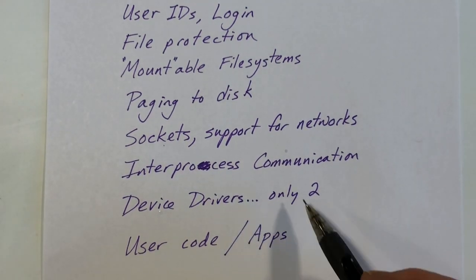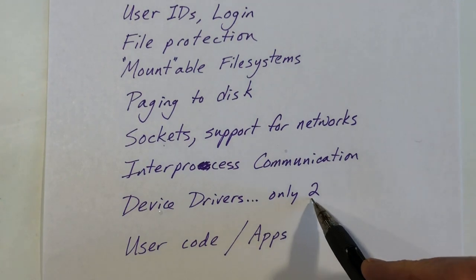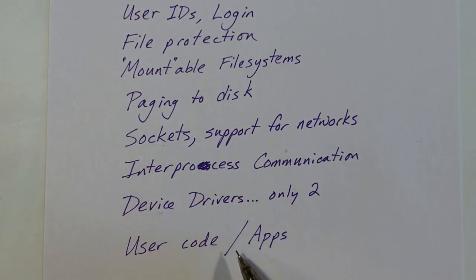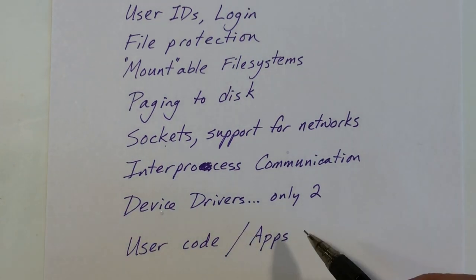There are two device drivers, but a real operating system, a real world operating system is going to have many more device drivers to support all kinds of different bits of hardware that you might find. And lastly, there is only a limited amount of user code. I listed the approximately 10 programs that are distributed with it, but a real usable Linux or Unix system is going to have lots and lots of apps.